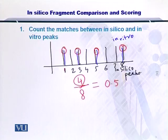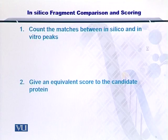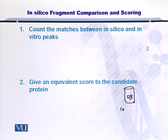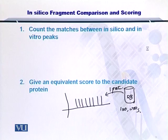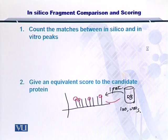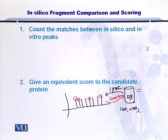So, for each protein in the protein database — here is your protein database, which of course contains thousands or hundreds of thousands of proteins — at a time you take one protein, you generate its in silico spectrum, you compare how many experimental peaks matched, and you return the score for this protein. In this way, you will return a score for all the proteins in the protein database, so each candidate protein will have a score for itself.